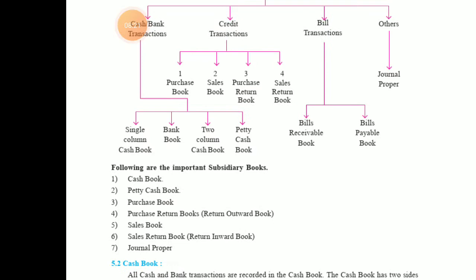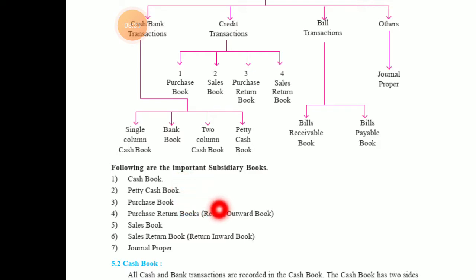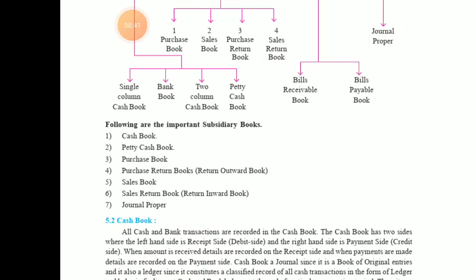All together there are seven types of books maintained: cash book, petty cash book, purchase book, purchase return book (also known as return outward book), sales book, sales return book (also known as return inward book), and journal proper. These seven books are maintained according to the type of transaction, and you all have to learn these — they are very easy.